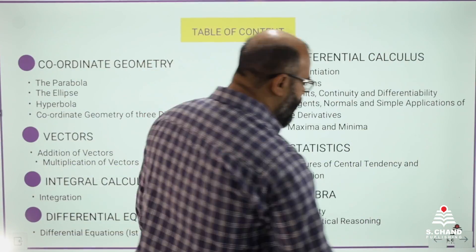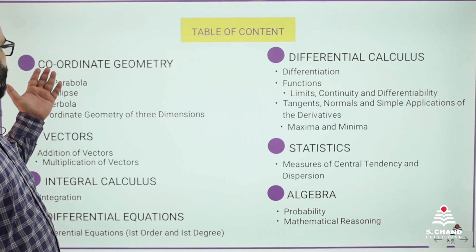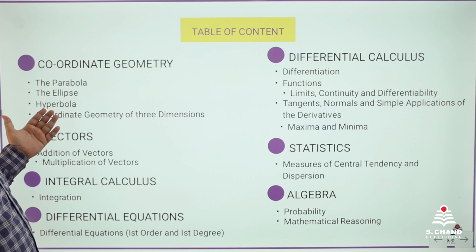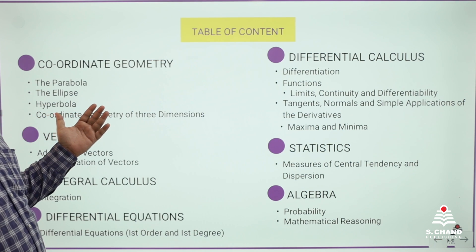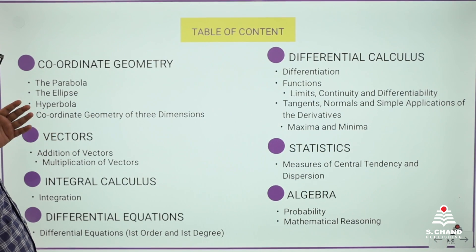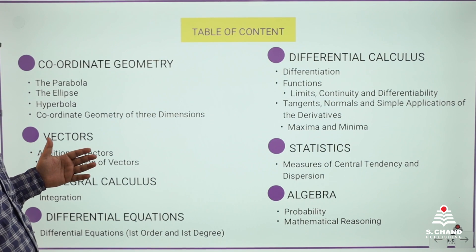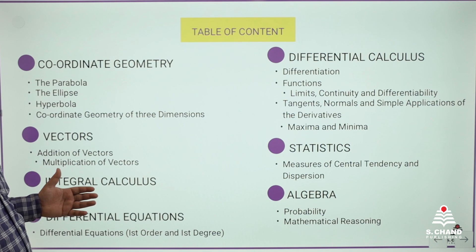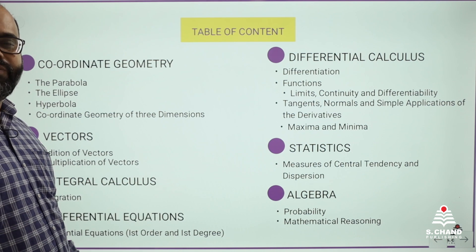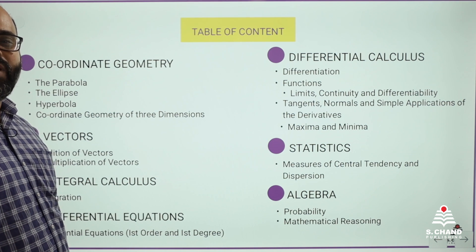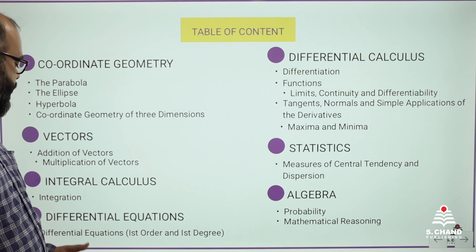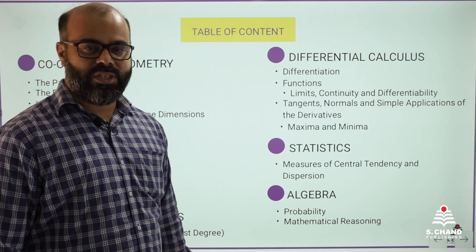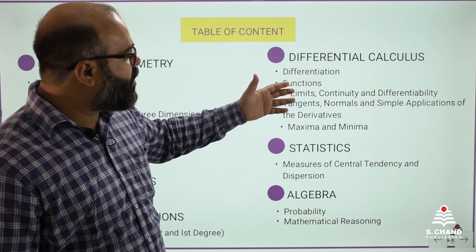Let us see what chapters we are going to cover in this book. We will continue with coordinate geometry — parabola, ellipse, hyperbola, and coordinate geometry of three dimensions. Then vectors — addition of vectors and multiplication of vectors. Then integral calculus — integration covering all parts: definite, indefinite, area under the curve, and limit of sum.